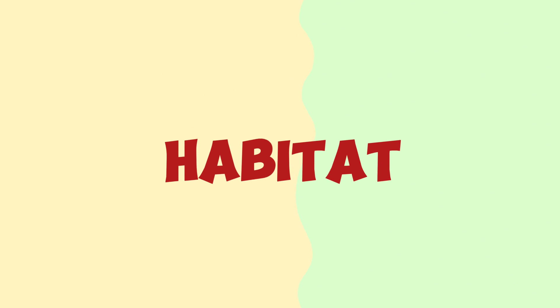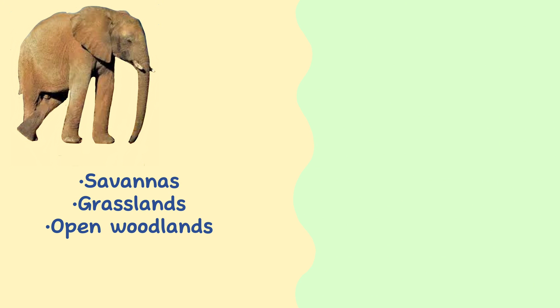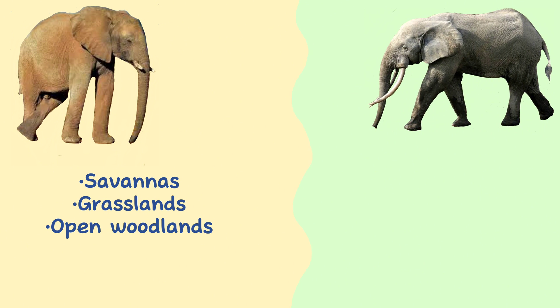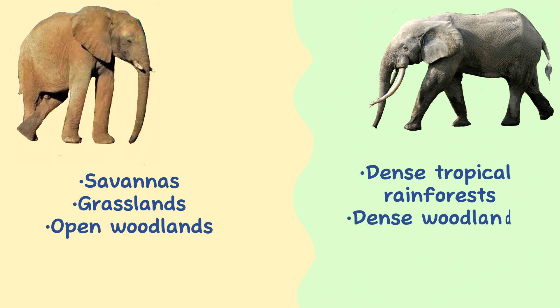Habitat. African savannah elephants primarily inhabit savannahs, grasslands, and open woodlands across sub-Saharan Africa, and are more commonly associated with open, non-forested areas. African forest elephants are found in dense tropical rainforests and dense woodlands of Central and West Africa, and are adapted to living in forested environments.